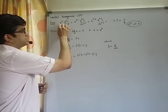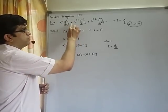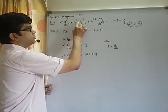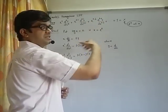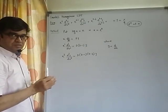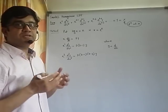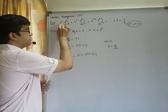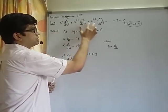For example, if it is x raised to 3, it will be d cube y by dx cube followed by x square into d2y by dx2 plus x into dy by dx and so on. This is the most crucial feature for identifying Cauchy's Homogeneous Linear Differential Equation. The power of x is same as the order of derivative in each term.